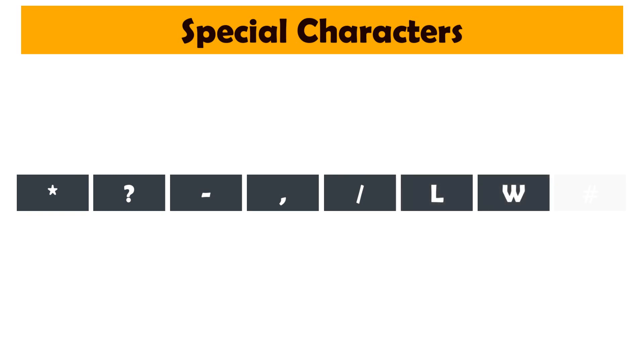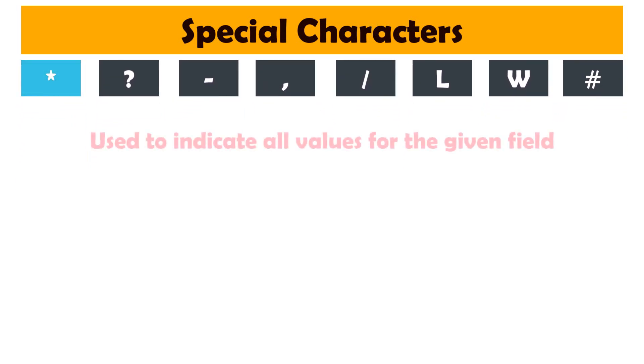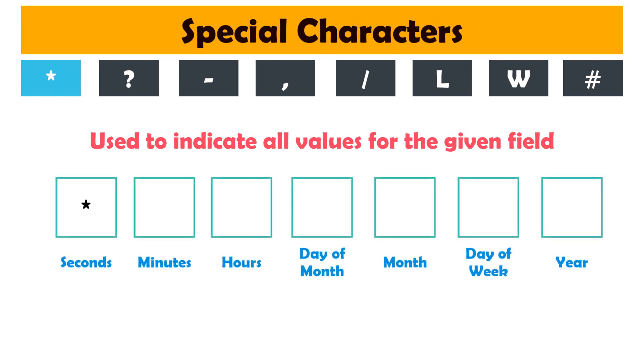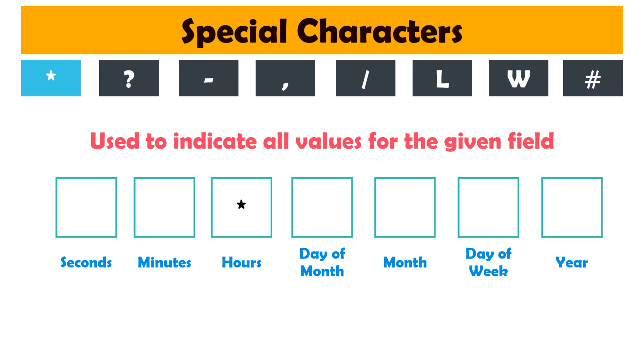Star means all — it is used to indicate all values for the given field. If a star is set in the seconds field, it means that the bot should be triggered every second. If this is set in the hours field, it means every hour. This is how it is interpreted depending on the field in which it is entered. Star characters can be used in any of the seven fields.